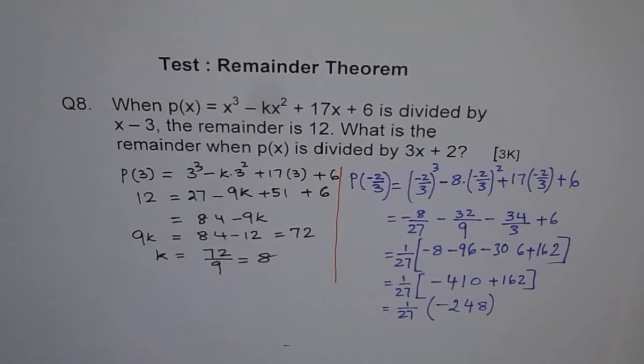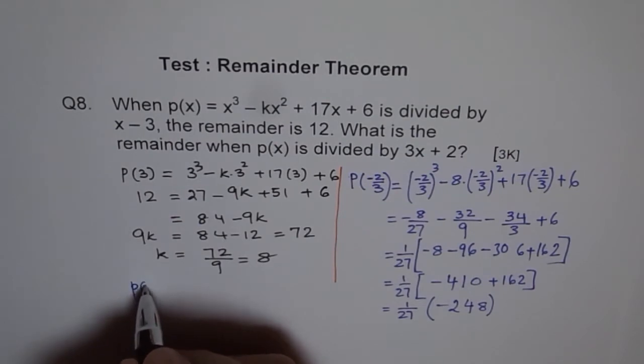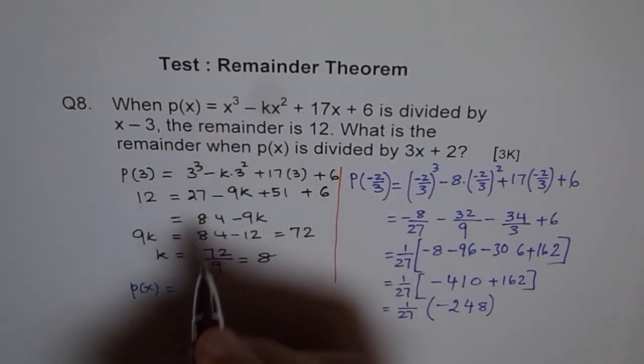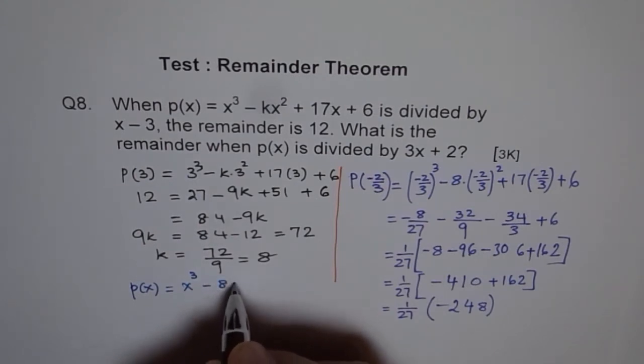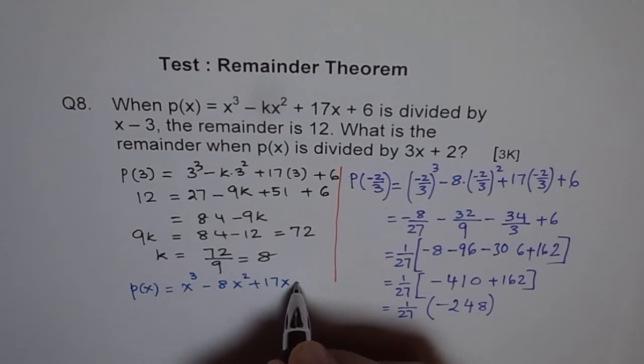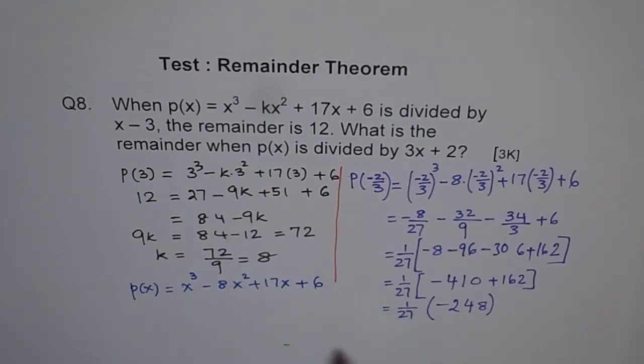And now, so therefore, I could have written my final equation here. It's better to write equation. So we have p(x) actually is equal to x cube minus 8x square plus 17x plus 6.